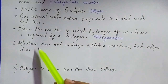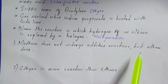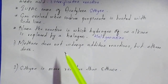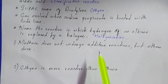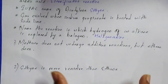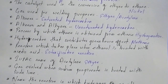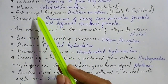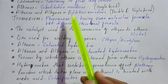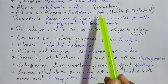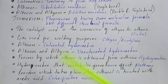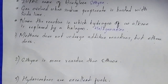Now for 'give reason' type questions. First: methane does not undergo addition reaction but ethene does. You must know that methane undergoes substitution reaction, as discussed earlier. Methane is an alkane, so it undergoes substitution reaction. Ethene is an alkene, so it undergoes addition reaction. You have to give the reason why.